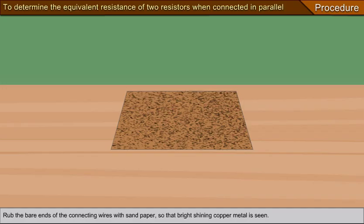Procedure. Rub the bare ends of the connecting wires with sandpaper so that bright shining copper metal is seen.